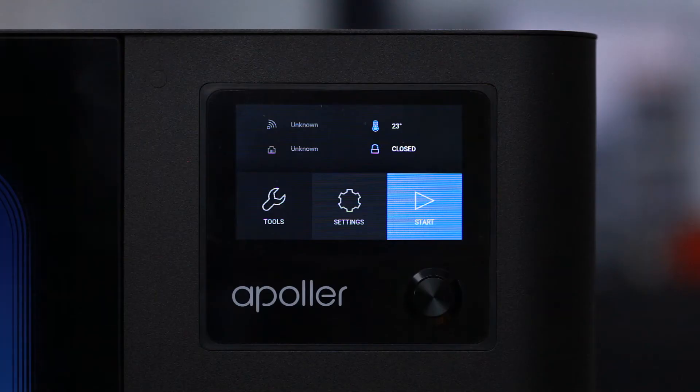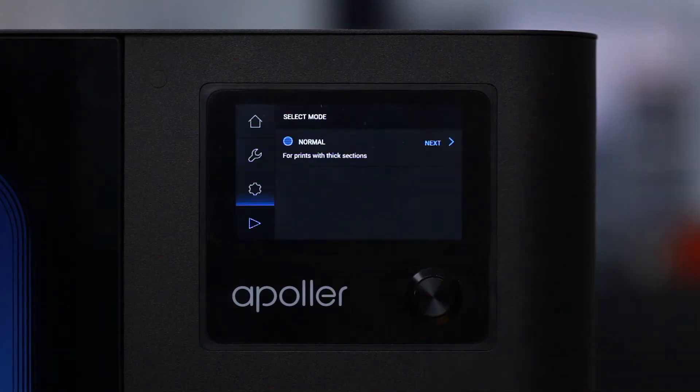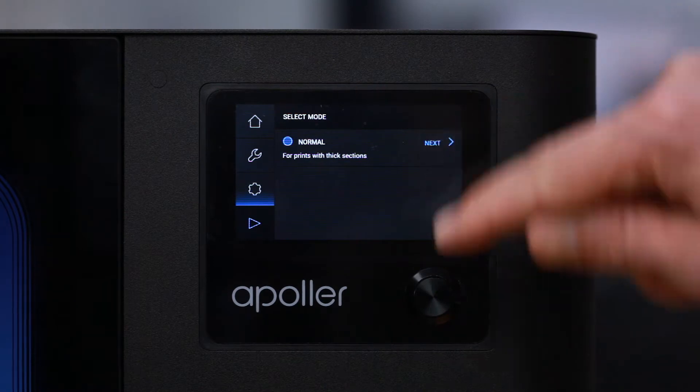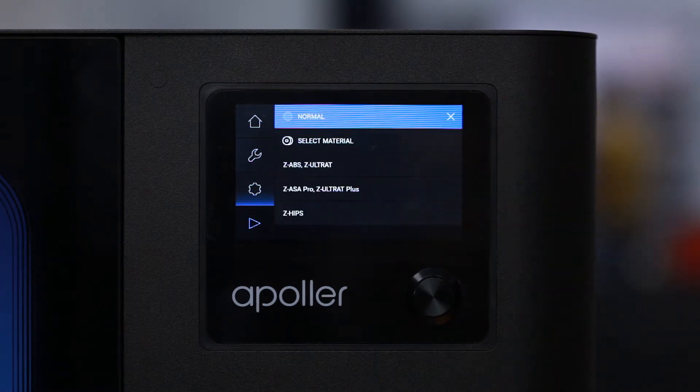To start the smoothing process, select Start in the main menu. In the first step, you have to specify the type of the 3D print which is going to be smoothed. For now, choose the Normal option, which suits most of the prints.